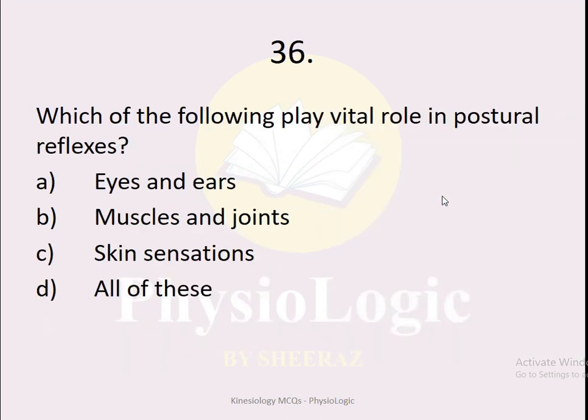MCQ number 36: Which of the following play a vital role in postural reflexes? Option A eyes and ears, option B muscles and spindle, option C skin sensation, option D all of these. The correct option is option D, all of these. Eyes, ears, muscles, joints, and skin all play a vital role in postural reflexes.